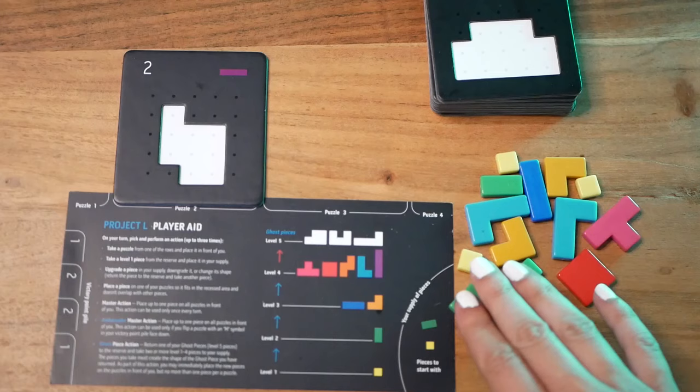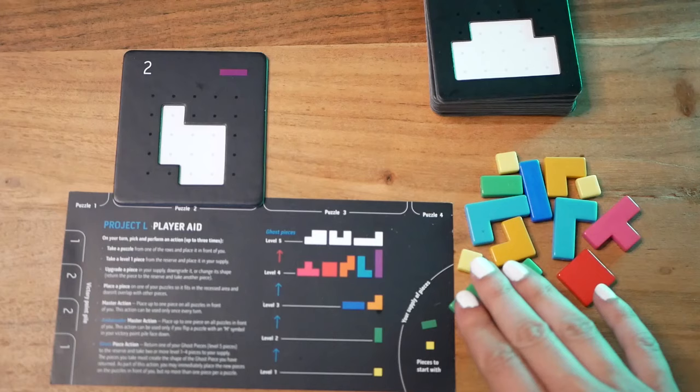The tiebreaker in case of a tie is the number of completed puzzles. If there is still a tie, then the player with the most leftover pieces wins. And that's all you need to know in order to start your first game of Project L. If you have any questions, you can ask me in the comment section below. And if you like this video, please give it a thumbs up, subscribe, and share it. And I'll see you in the next video.